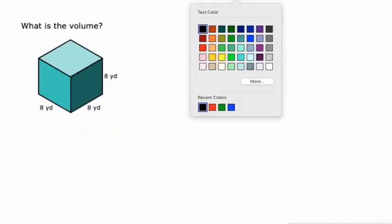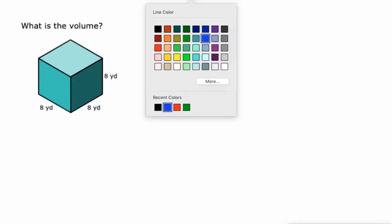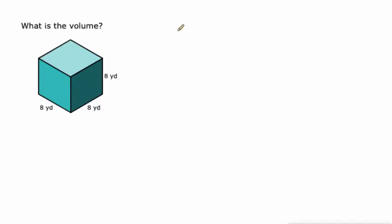But I'm gonna use a completely different formula for this one and that is volume equals e cubed. Because with a cube like this where all the edge lengths are the same, we can just kind of take a shortcut and do eight cubed. And eight to the third power on a calculator is 512. So 512 cubic yards.